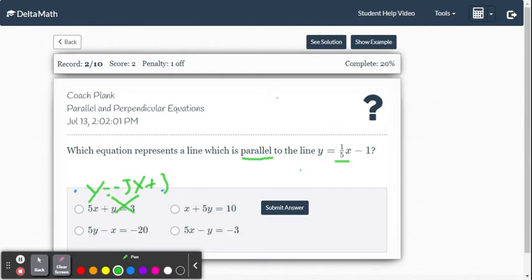This one on the right, we get 5y equals negative x plus 10 divided by 5. So y would equal negative 1 fifth x plus 2. Close, but it's a negative slope. That's no good.